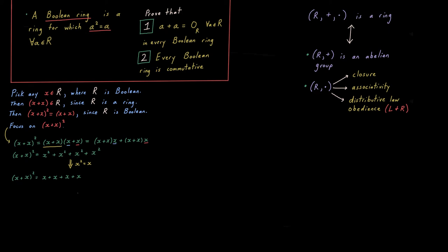After that, utilize the definition of a Boolean ring to rewrite that as four X's added together. And finally, utilize the itty-bitty fact up top in red to note that four X's added together is the same as two X's added together, for any element X in R.